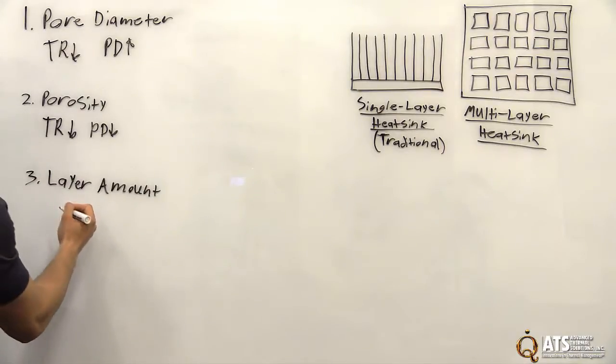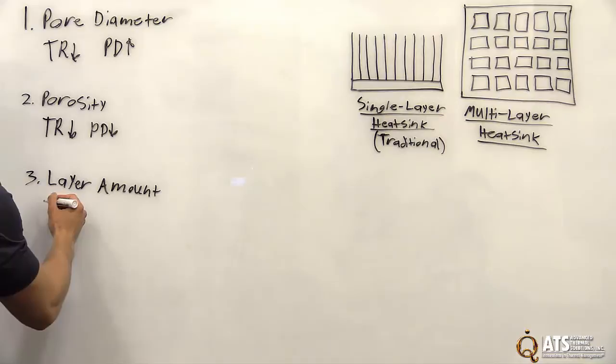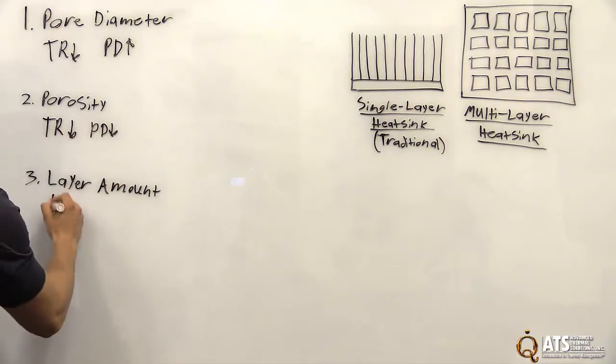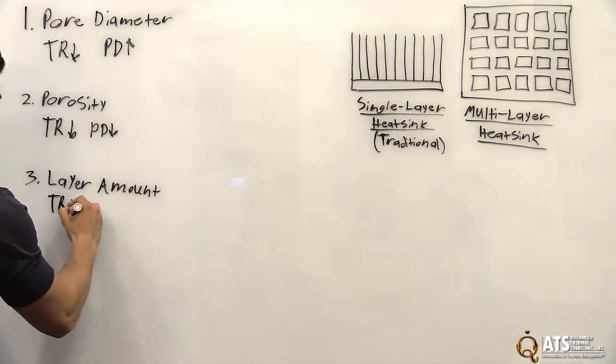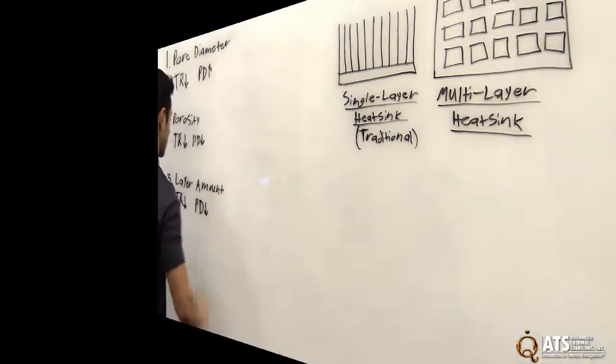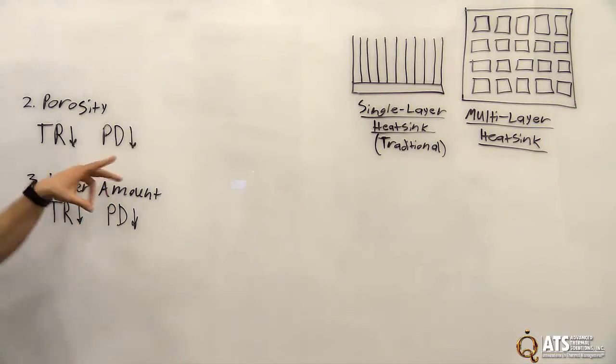Now for layer amount, this is just your standard parameter. These are more for fine-tuning the heat sink, but for layer amount, of course as you add layers, your thermal resistance drops and your pressure drop drops as well. So we'll now explain the physics behind porosity and layer amount and why this helps to increase performance two-fold, being that thermal resistance and pressure drop decrease.